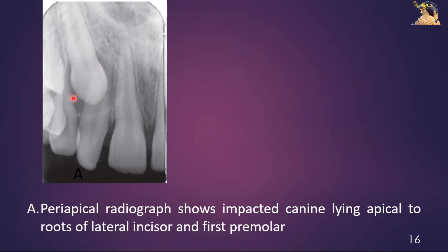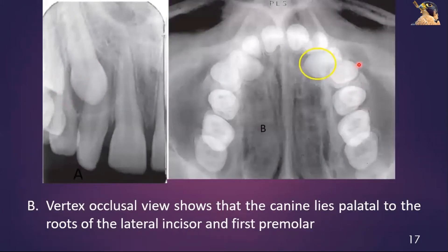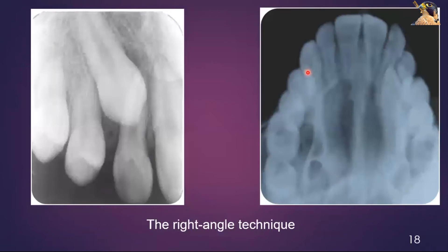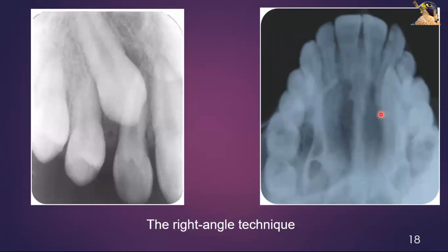This periapical radiograph shows the impacted canine lying apical to the roots of the lateral incisors and the first premolar. The occlusal radiograph shows that the canine lies palatal to the roots of the lateral incisor and the first premolar. Similarly, another periapical radiograph shows the impacted canine, and the corresponding occlusal radiograph confirms that this impacted canine is present on the palatal side.